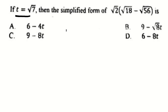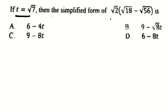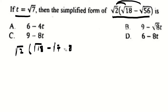We need to simplify and write this expression in terms of t. First, note that 56 is the same as 7 times 8, so there is a factor of 7 in 56. Our objective is to express the result in terms of t, so we write radical 2 in bracket: radical 18 minus radical 7 times 8, or radical 7 times radical 8.